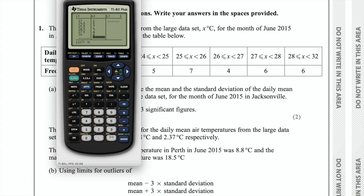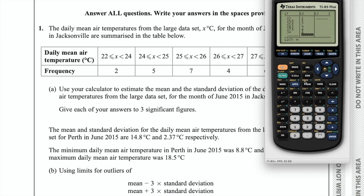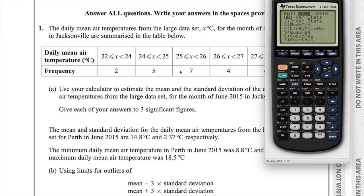Once you have input all of that data into list 1 and list 2, go back to the stats menu and go across to calc. We want one-var stats, standing for one variable statistic. This is not a scatter plot — you have an independent variable, the temperature, and a dependent variable, the frequency. That's one variable. So go into that.